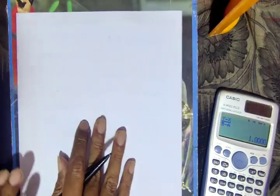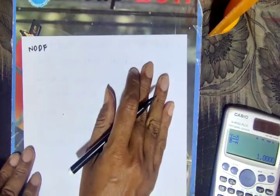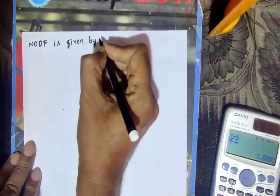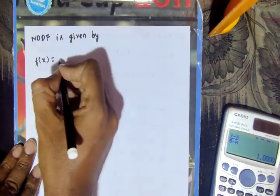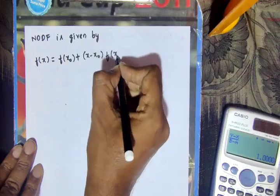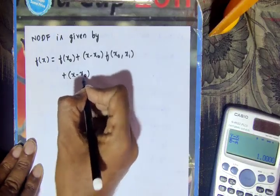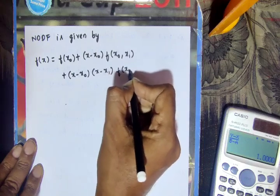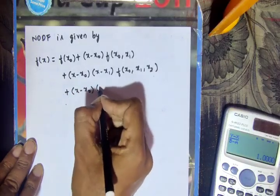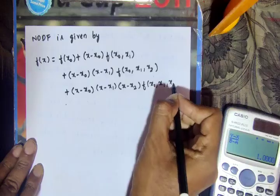Now we apply Newton's divided difference formula, which is given by: f(x) = f(x0) + (x - x0)·f[x0,x1] + (x - x0)(x - x1)·f[x0,x1,x2] + (x - x0)(x - x1)(x - x2)·f[x0,x1,x2,x3].